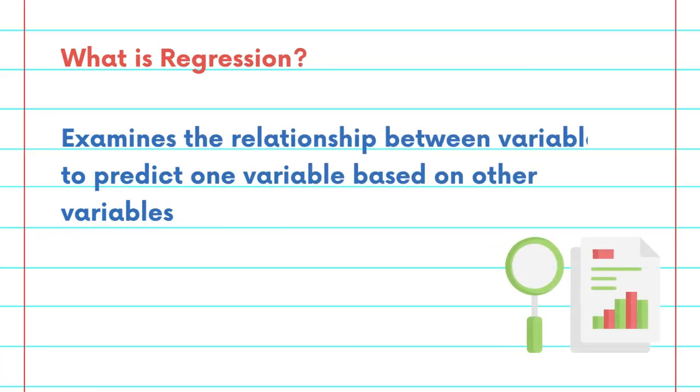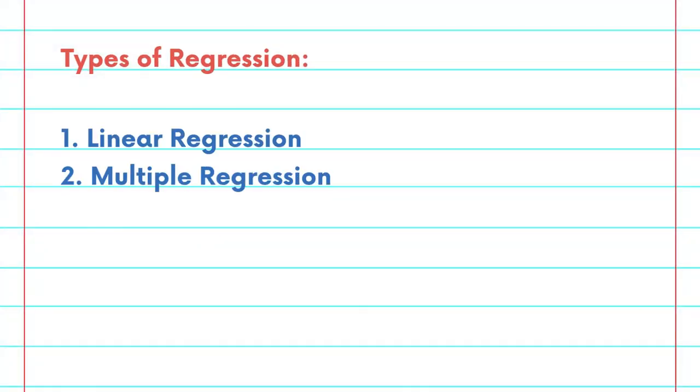Regression analysis examines the relationships between variables, specifically to predict one variable based on others. There are several types of regression, including linear regression, multiple regression, and polynomial, etc.